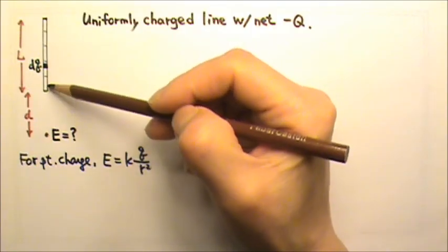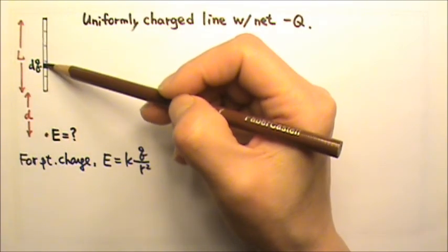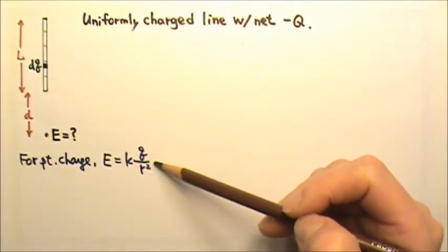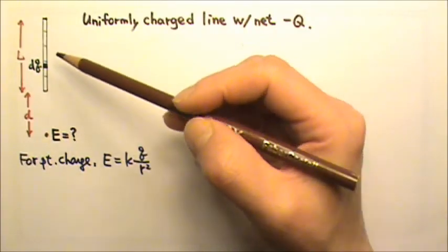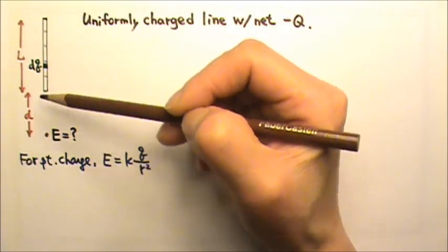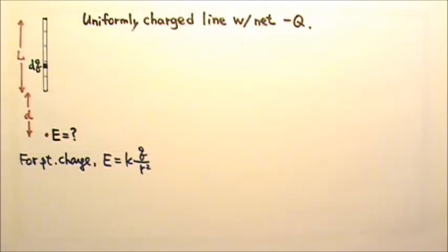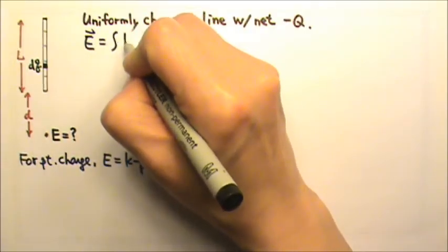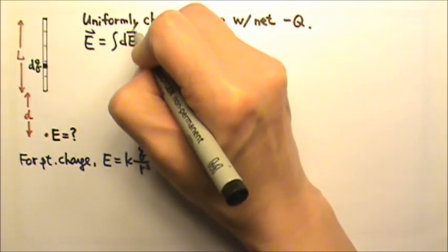We have to chop the charge into little pieces of dQ. Each dQ would be a point charge, so we can use this equation to find the field. And then we have to add the field produced by all of the little pieces of dQ together to get the total electric field. So the vector E is the integral of the vector dE.